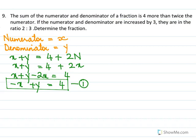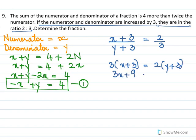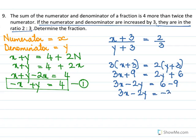The second part says if numerator and denominator both increase by 3, they are in a ratio of 2 to 3: (x plus 3) over (y plus 3) equal to 2 over 3. Cross multiplying: 3(x plus 3) equal to 2(y plus 3), so 3x plus 9 equal to 2y plus 6, giving 3x minus 2y equal to minus 3. This is equation 2.